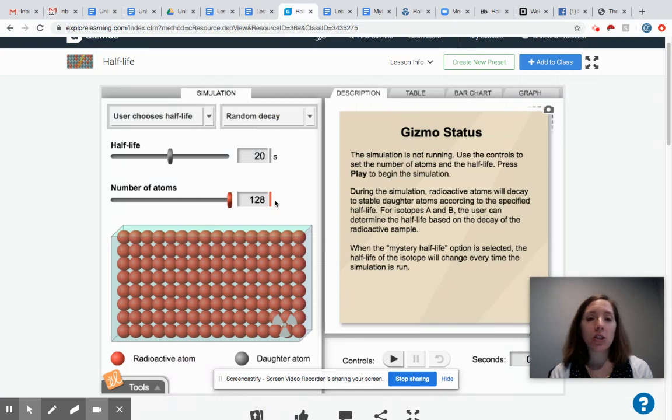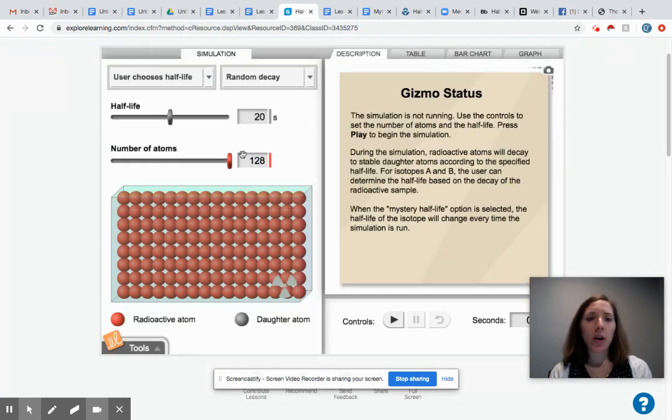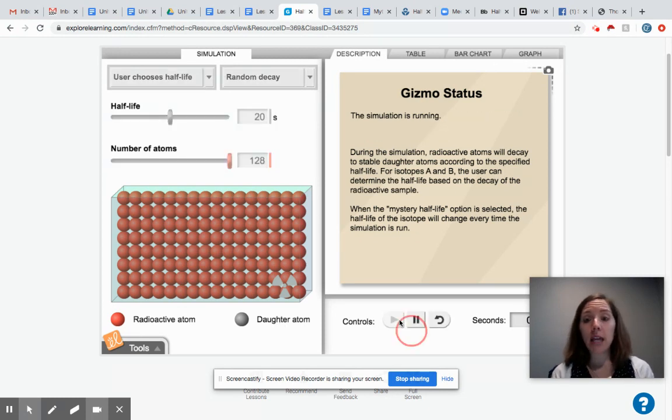So observations could just be things like, there are this number of atoms or red atoms represent this or silver atoms represent this. You can play the simulation and make some observation about what happens. The red atoms do what? What do you see going on? What's happening to the red atoms over time? What's happening to the silver atoms over time?